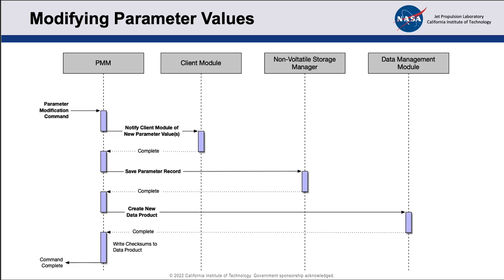For parameter verification, we don't use actual values in the data products downlinked back to Earth — we use checksums. That saves a whole bunch of downlink bandwidth. If you have a parameter copy with 100 parameters, you don't want to downlink all 100 values; we downlink a single 32-bit checksum. The ground tools know the state at time A, know what command was sent, and know what the expected checksum should be. The ground system verifies that the checksum matches the expected value, and therefore knows the onboard parameter state at all times — it's a pretty nice system for getting quick confirmation of what your parameter state is on board.